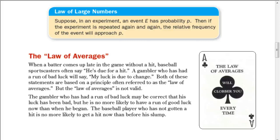That pretty much summarizes this lesson — just looking at those two different laws. Hopefully you understand the difference. There is an activity in the UCSMP Functions, Statistics, and Trigonometry book that you could do to illustrate the point of the law of averages versus the law of large numbers. But we're not going to take the time to do that in this video. Good luck as you work on your assignment. Thank you.